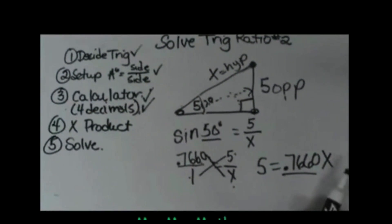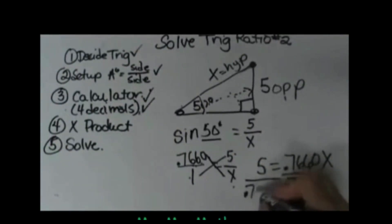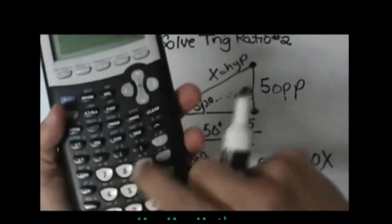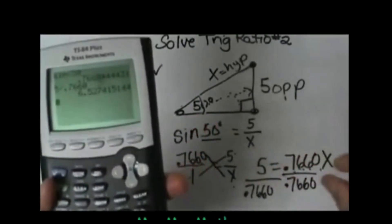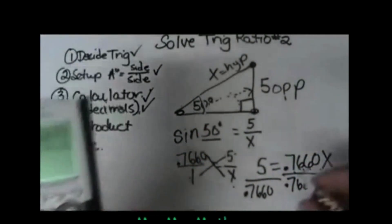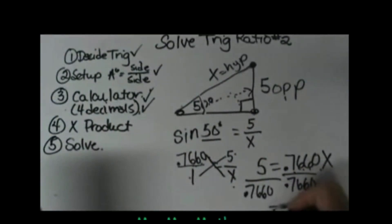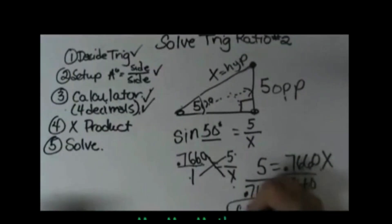To solve it and to get the x by itself I have to divide by 0.7660 and this is where it gets a little tricky so just treat that as a coefficient and let's divide 5 by that decimal. So 5 divided by 0.7660. Let's see what we get. I'm getting 6.527, so that means the side is 6.5 and that is how long my hypotenuse is.